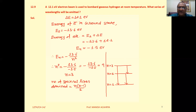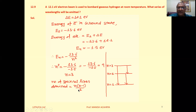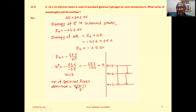Remember this generalized equation useful for entrance examinations: the number of spectral lines obtained equals N into N minus 1 by 2. This means when an electron is in the nth state and transitions to the ground state through multiple transitions, the total number of spectral lines is N(N-1)/2. For N equal to 3: 3 into 3 minus 1 by 2 equals 3, so you get a total of 3 spectral lines.